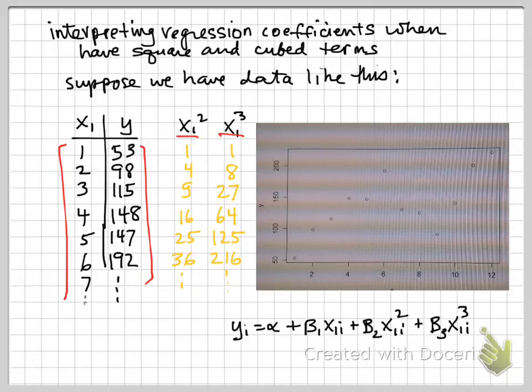And then we're going to run a regression that looks like this, where y depends on a constant term, the alpha, and also then depends on x, x squared, and x cubed.